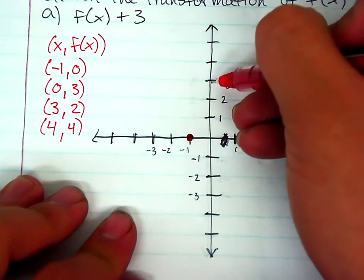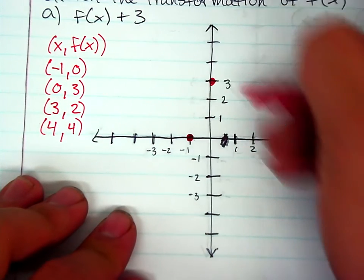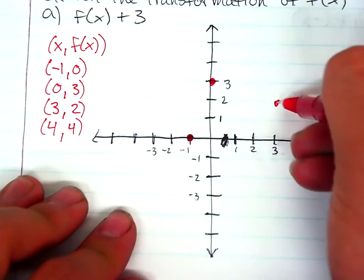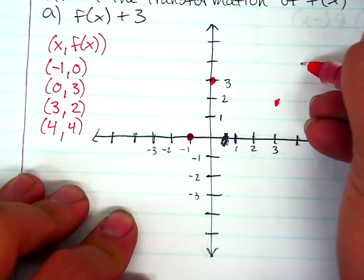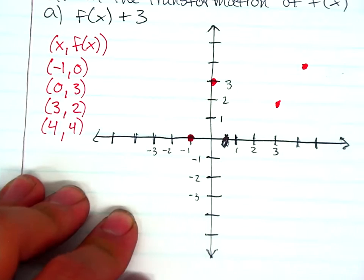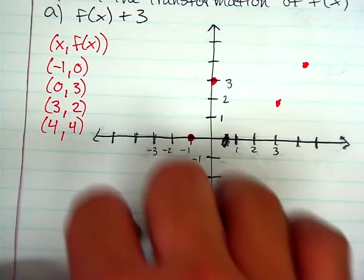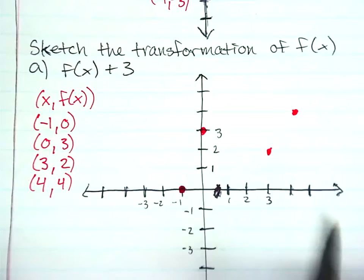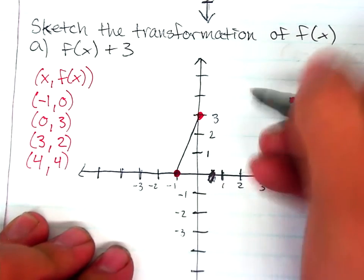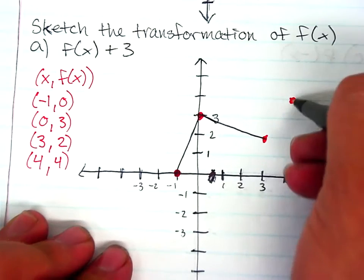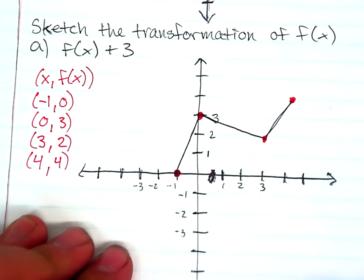So, these are the four points I need to plot onto my graph here. So, (-1, 0), (0, 3), (3, 2), and finally, (4, 4). I go ahead and connect these as well. If I can find my black pen, there it is. So, here I connect these two points, these two points, and these two points.